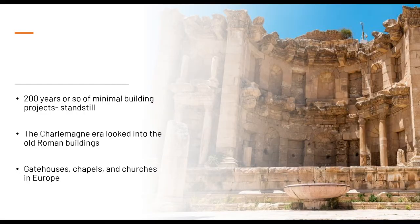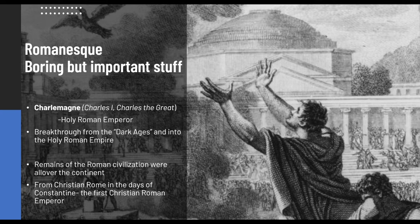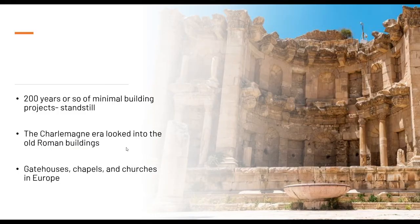During the Dark Ages there were about 200 years of minimal building projects — a standstill in architecture. Then the Charlemagne era — the architects of Charlemagne — looked into the old Roman buildings, which comprised gate houses, chapels, and churches in Europe. Since nothing had happened during the Dark Ages, they decided to reuse what they had. The Roman Empire had a vast reach, so they used whatever remained. That is the history behind Romanesque architecture.